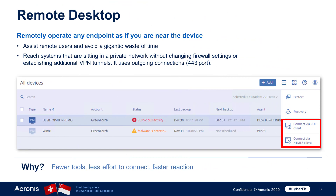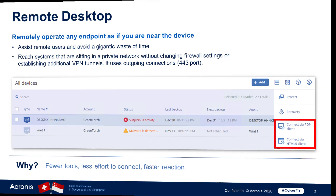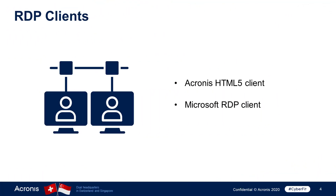Acronis Cyber Protect Cloud offers a convenient remote access to the customer's infrastructure which requires zero network configuration. It allows you to securely and remotely log into the customer's machine and assist remote users. Moreover, it allows you to reach systems that are sitting in a private network without changing firewall settings or establishing VPN tunnels.